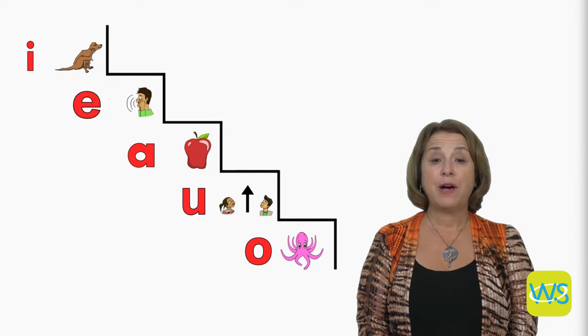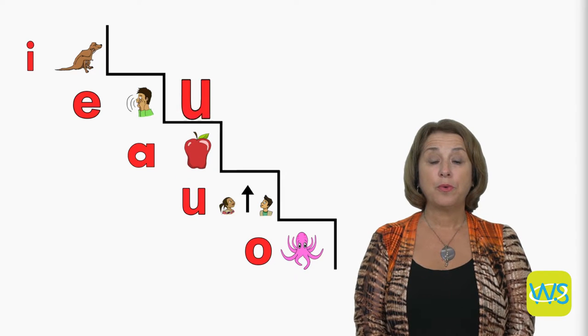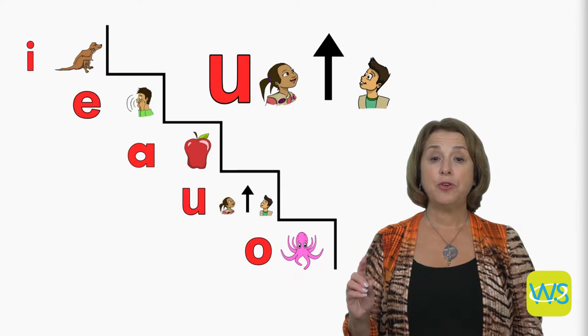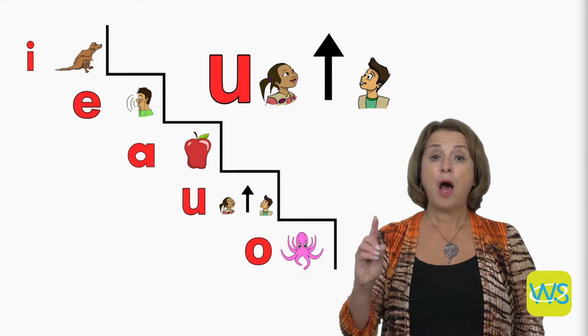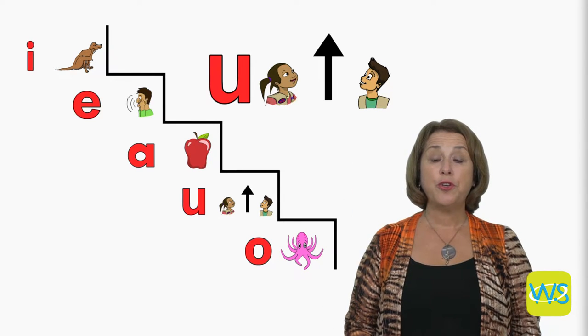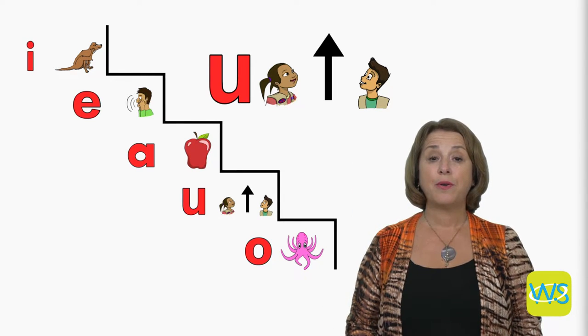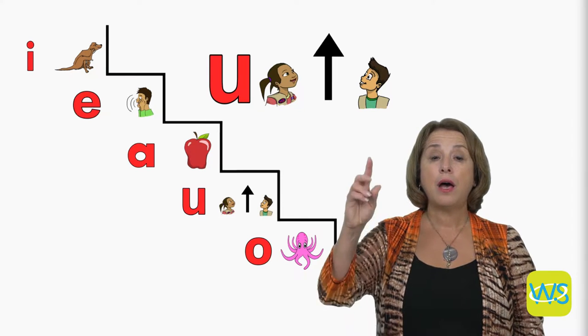Another step down is the letter U. The picture next to U is the symbol for up, because the letter U makes the short sound UH, as in up.